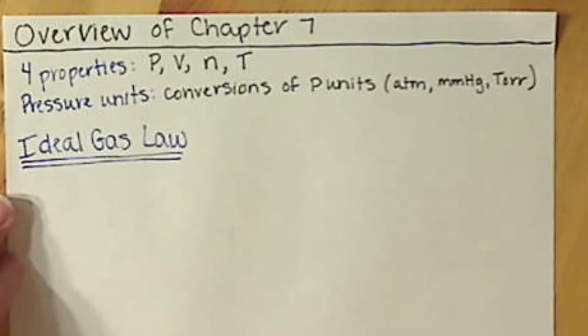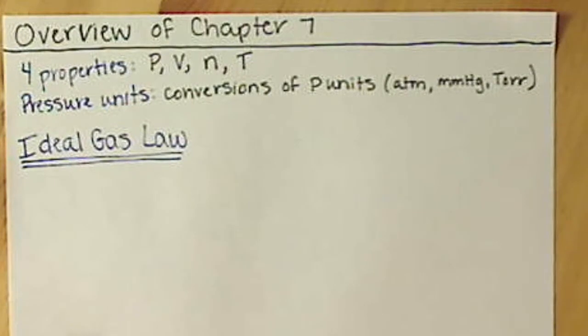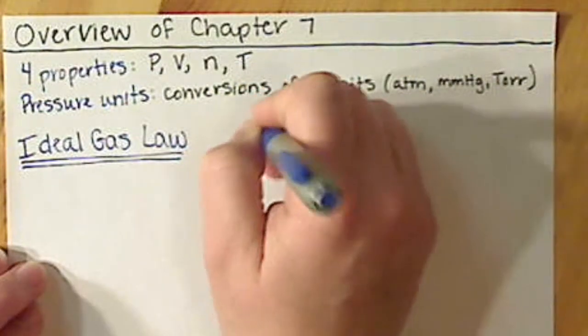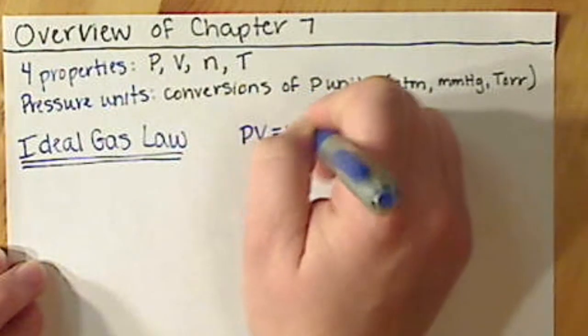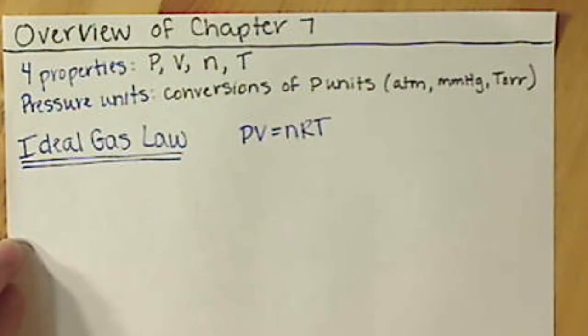Now that's not to say I'm not going to test or ask questions on the other stuff, but really if you can get the ideal gas law, you'll have most of Chapter 7 basically determined. Remember it's an equation that you need to know, so you need to know and memorize that PV equals nRT.